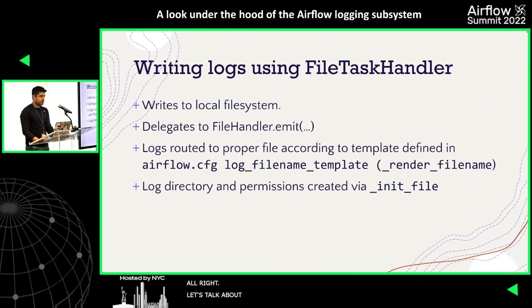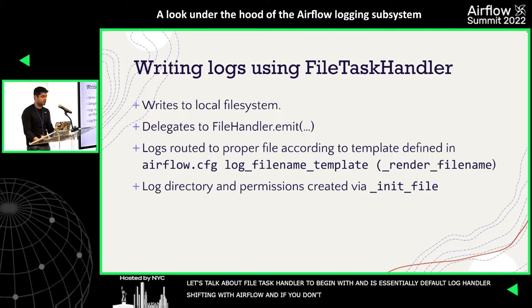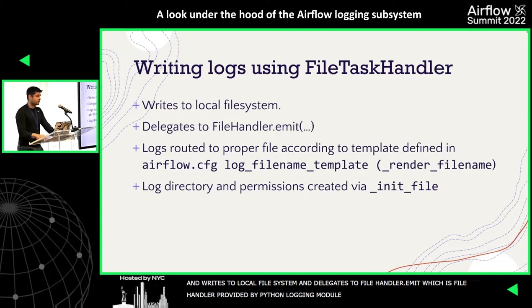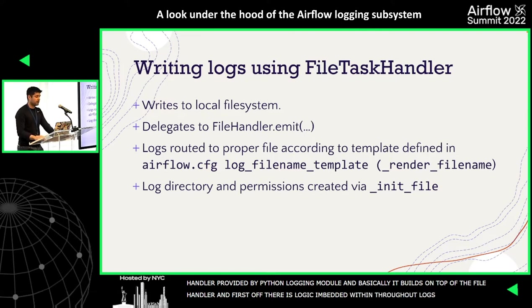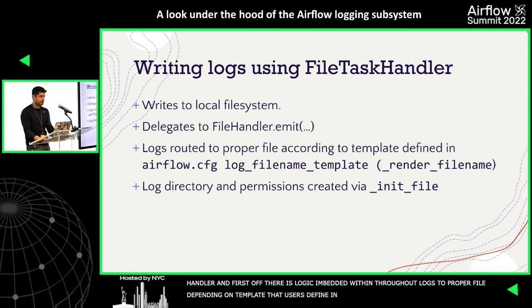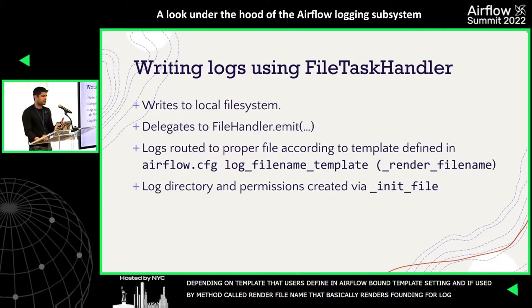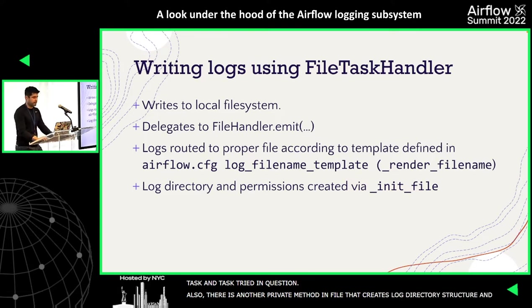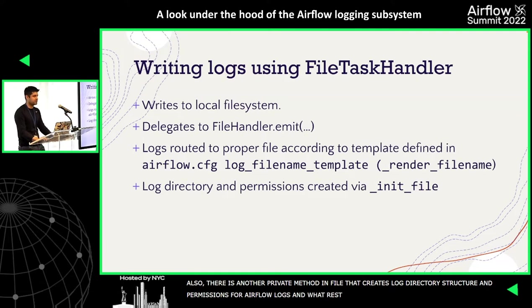The file task handler is the default log handler that ships with Airflow. If you don't replace it with another handler, that's what gets used — it writes to your local file system and delegates to file_handler.emit, the file handler provided by the Python logging module. On top of that, it includes logic to route logs to the proper file depending on the template users define in Airflow.cfg through the log_filename_template setting, using a method called render_filename. There's also a private method called init_file that creates the log directory structure and permissions for Airflow logs.